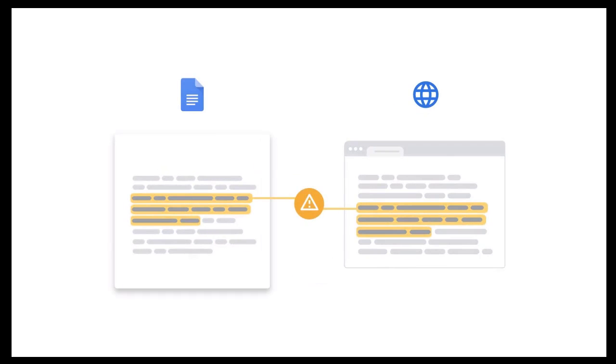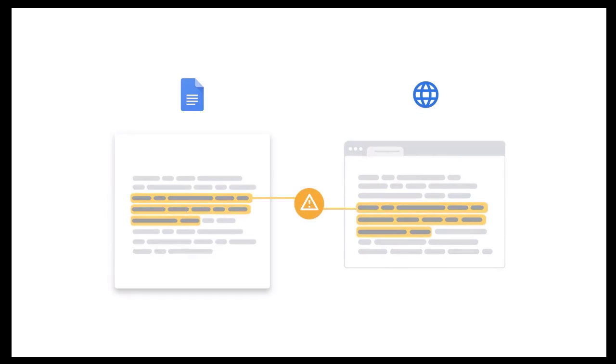With originality reports in Google Classroom, you and your students can compare their written work against billions of webpages and millions of books to identify possible areas of plagiarism or passages that may need proper citation. This can help students catch problems before they submit their work and allow you to easily check student writing while grading.